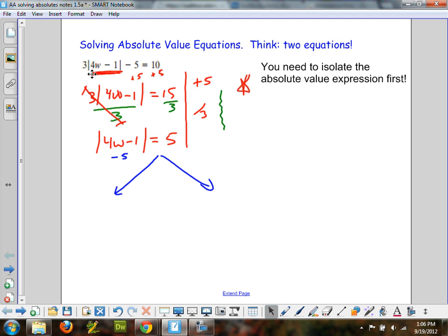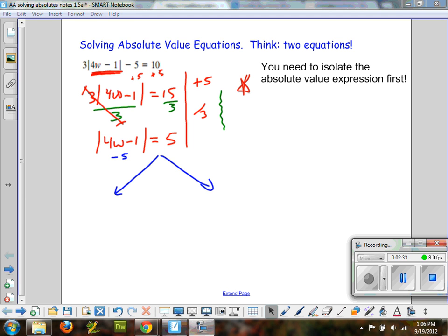So, the inside of it can be substituted for minus 5. If negative 5 is replacing the whole 4w minus 1, it should be true. So, I'm going to write that a solution can be found by setting the expression inside to negative 5. Very similar. Here's the other equation. It can also be positive 5 and just as true.